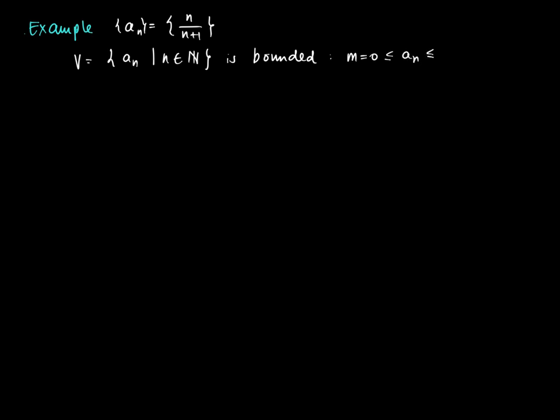Now this set is bounded. Why is that? Well actually if we vary n over the natural numbers then we immediately see that n divided by n plus 1 is always larger than 0, but also n divided by n plus 1 indicates that actually a_n is smaller than 1. So we can take capital M equal to 1 as an upper bound.